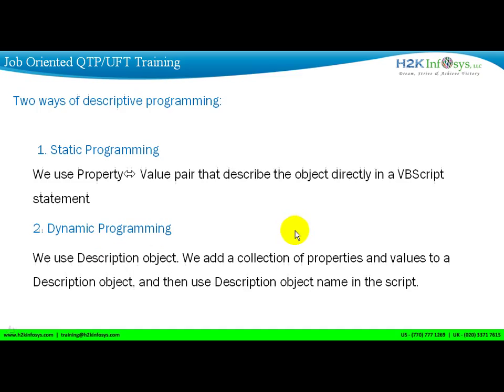There are different ways to do it. With static programming, you are going to use the property-value pair directly in the script. Or you can also create a description object, where you get all these objects dynamically — the description object stores the properties and you retrieve the property-value pair from it. In this presentation, we'll cover static programming, and future videos will cover dynamic programming using description objects.